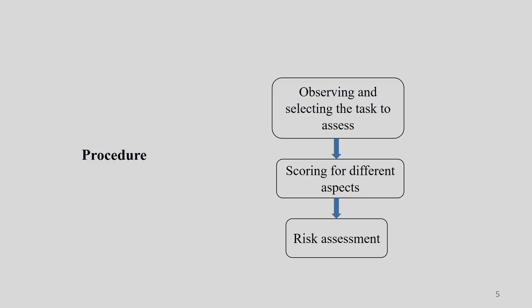Once you have the posture and task identified, you have to score for different aspects that we will understand in the next slides. Once you do the scoring, you put it into a pre-computed table and from there you assess the risk. This is the whole procedure for the OWAS working posture analysis system.